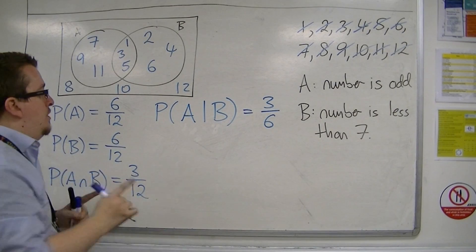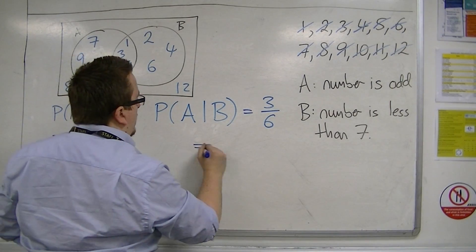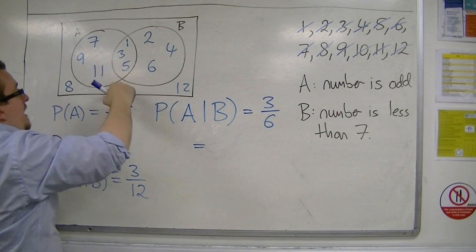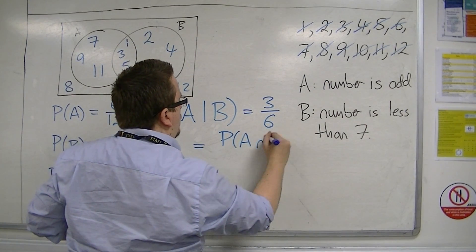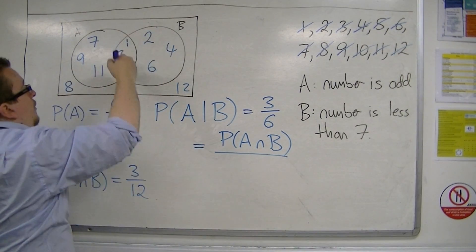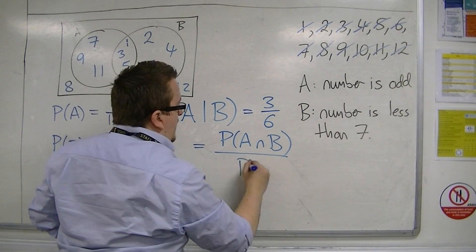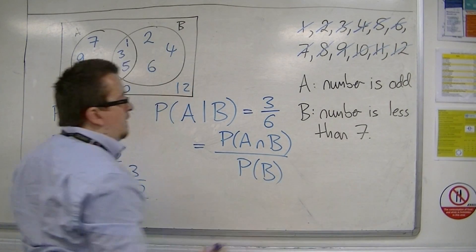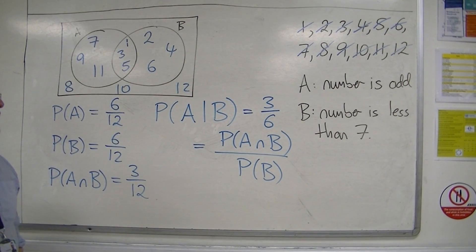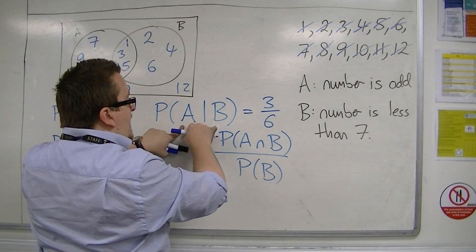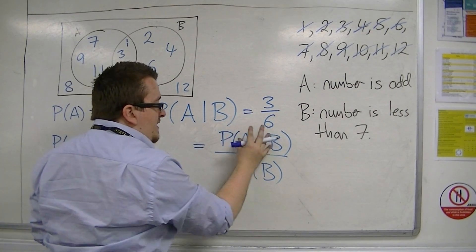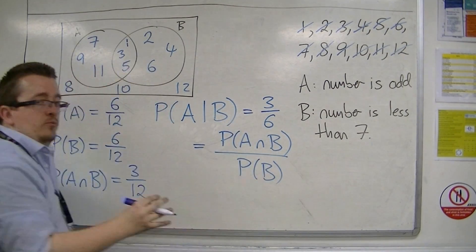Now, the calculation for that is, well, that was the intersection, A intersection B, divided by, or out of, B, the probability of B. So, this is the formula for conditional probability. The probability of A, given that B has already happened, is the probability of the intersection of B, divided by the probability of B.